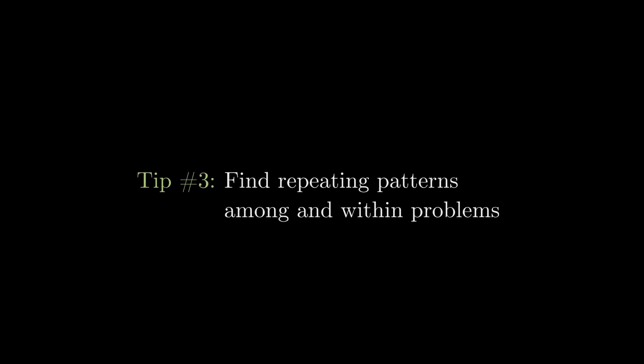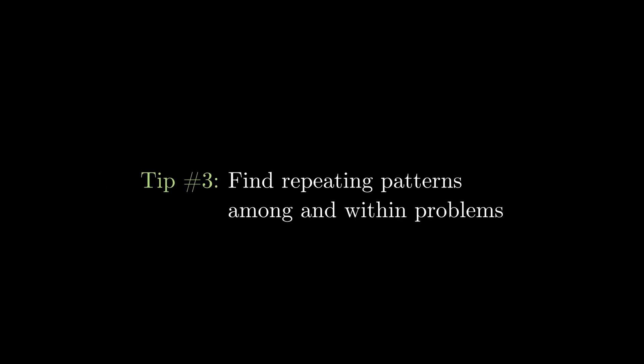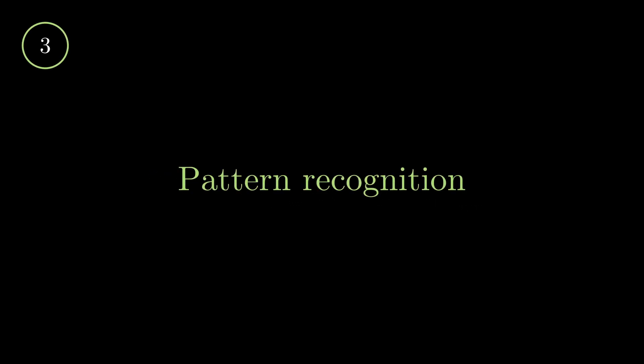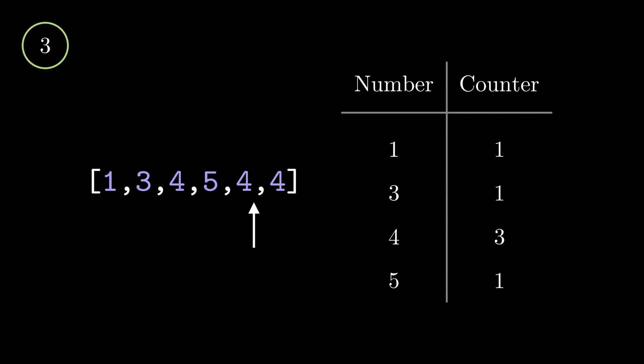Now comes tip number 3: Try to find if there are any repeating patterns among and within problems. I like to see pattern recognition as a process where we try to gain an intuition of what needs to be done. Here, we discover that we need to constantly associate the numbers in the list with a counter that tracks the number of instances in which the element appears and store it somehow. At this point, we might think of using dictionaries to help us with that first objective.